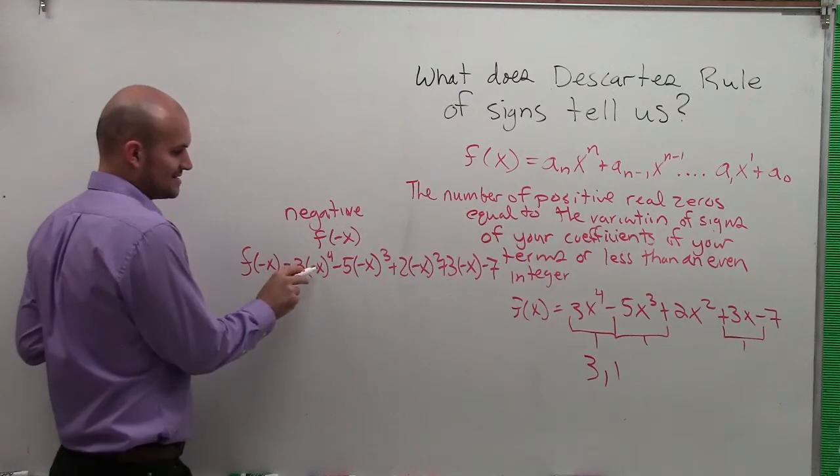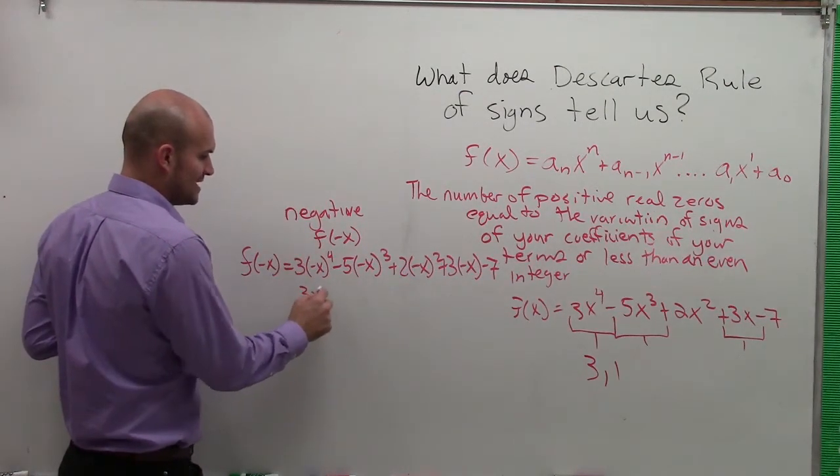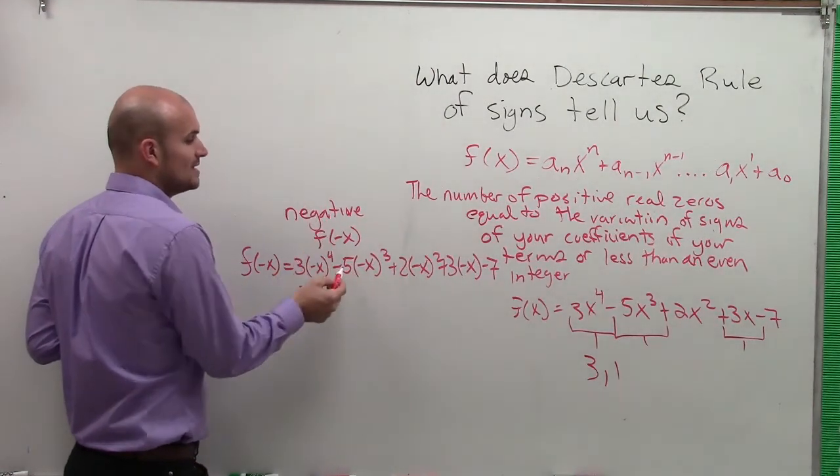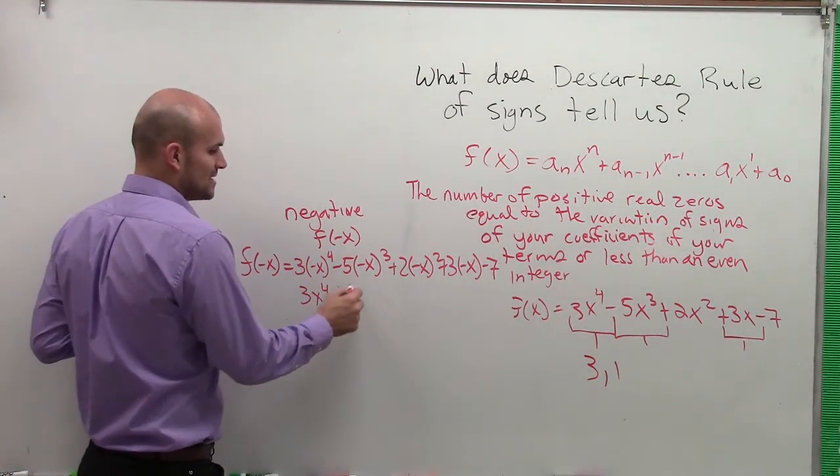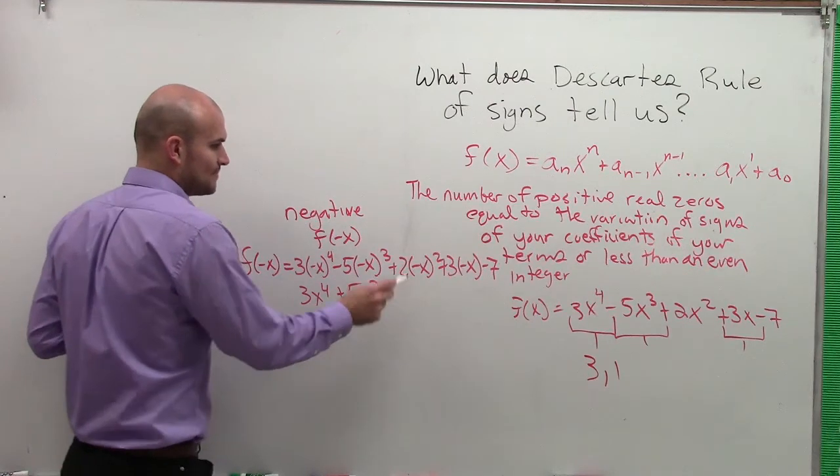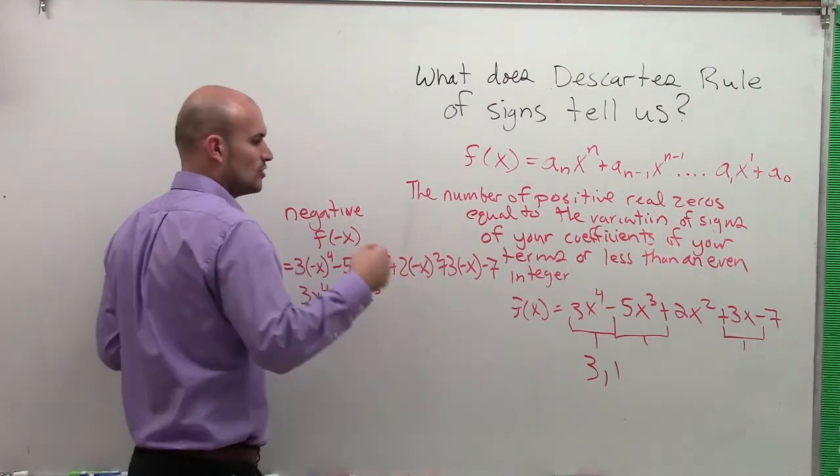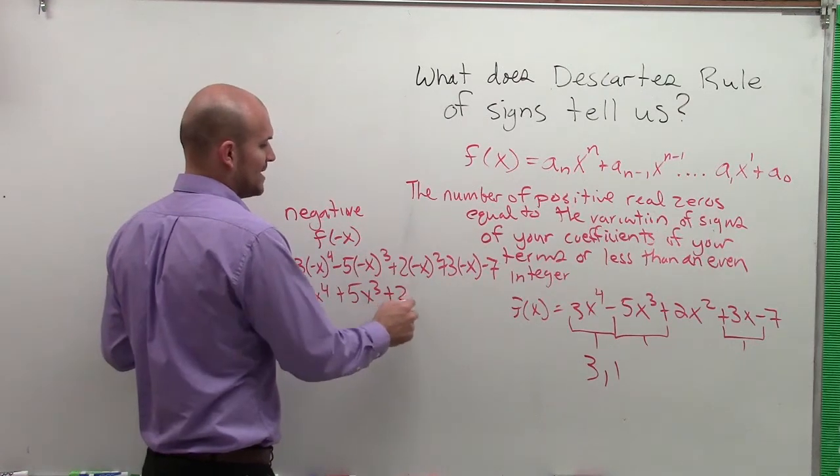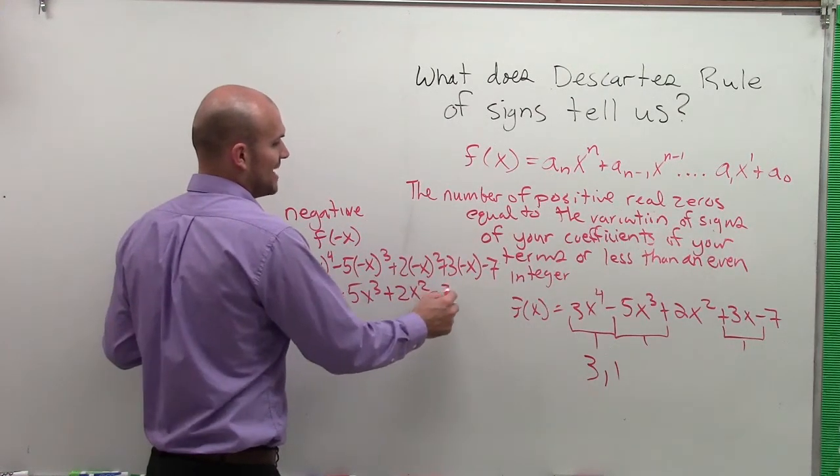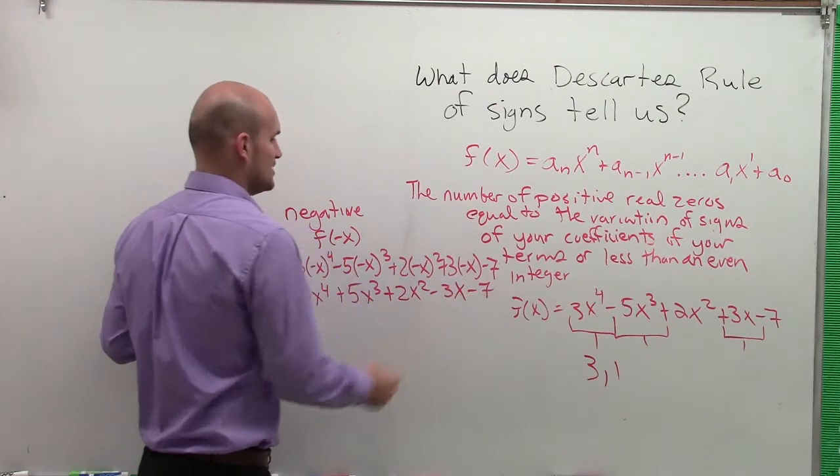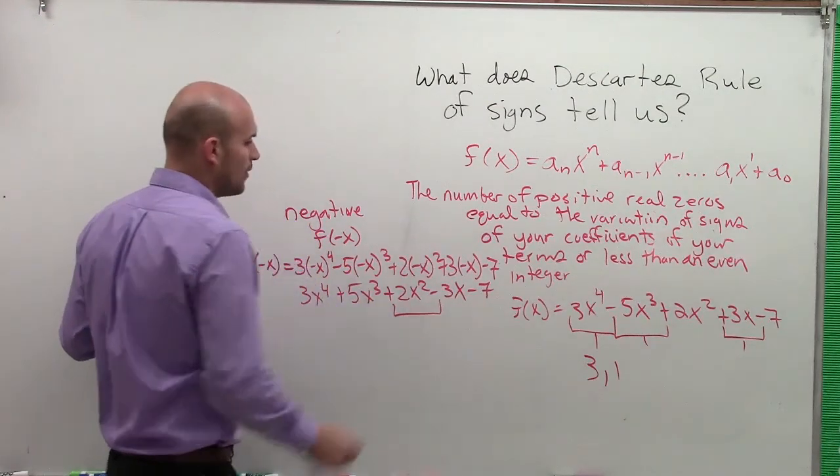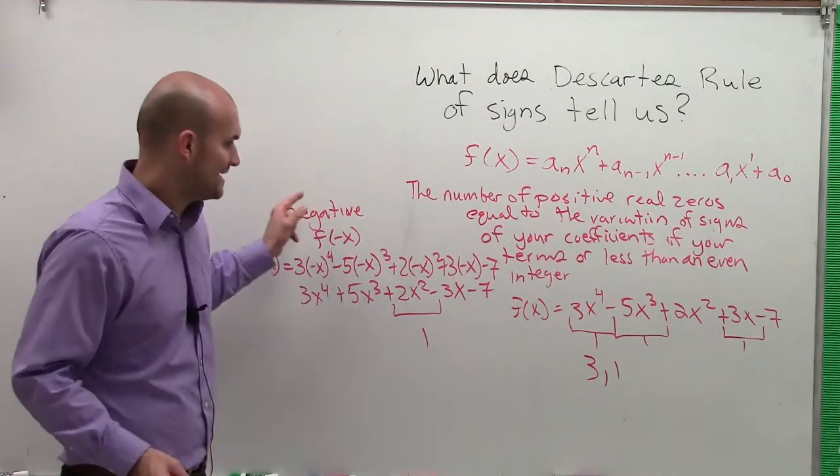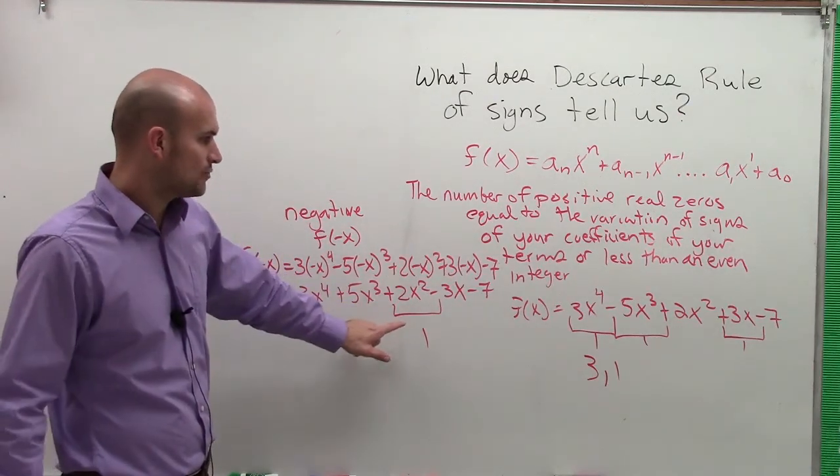So let's go and evaluate this. Negative x to the 4th is always going to be a positive, so I have 3x to the 4th. Negative x cubed is a negative x cubed times a negative 5, which now becomes a positive 5x cubed. This negative x squared will become positive times 2 will remain positive, 2x squared minus 3x minus 7. So you can see I only have now one variation, so there's only going to be one negative possible real zero.